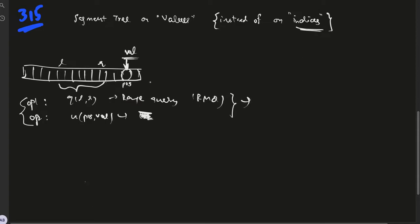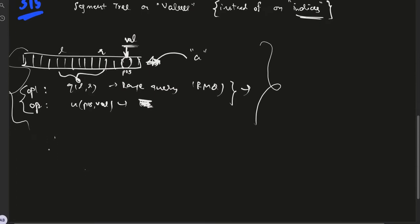What we observe here is the array on which we perform these operations, the indices of the array stay the same. We've been given this array A on which we are performing these two operations. Now with this out of the way, let's see what segment tree on values means.